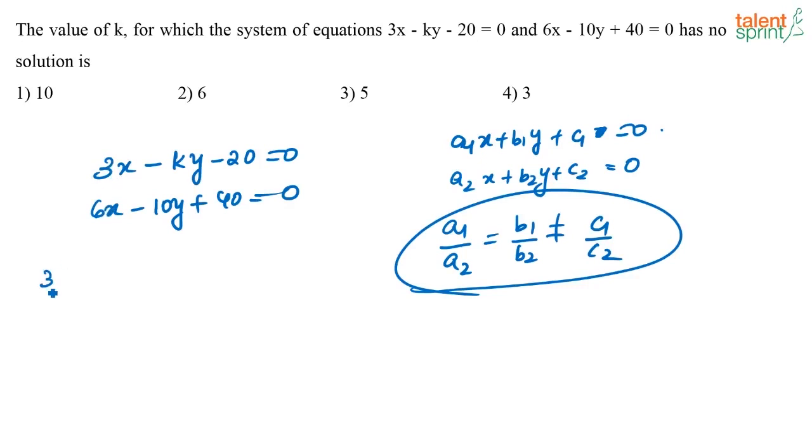This is 3/6. 3/6 equals 1/2. So this should also equal 1/2. So K/10 should equal 1/2 means K should equal 5. Obviously that is not equal to C1/C2. When you do C1/C2 you get minus 1/2.